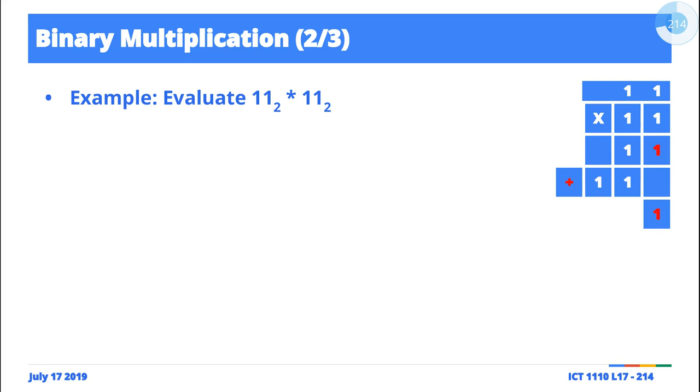1 plus 1, 0, and then we carry the 1. And then we'll have 2 1s, so 1 plus 1 is going to be another 0. We carry the 1 and then we just drop down the 1.